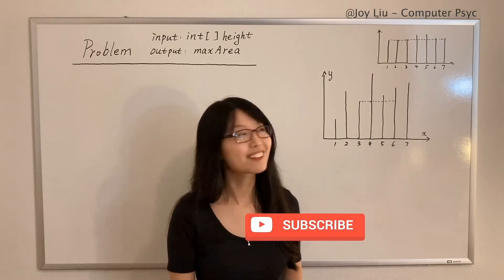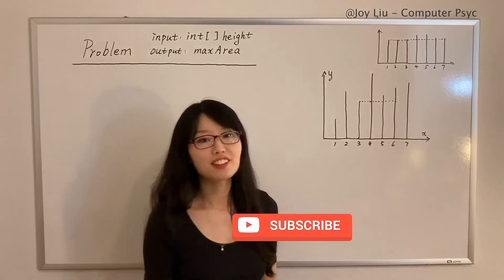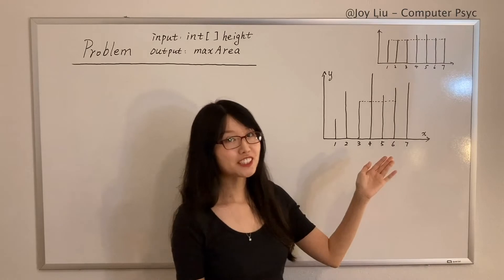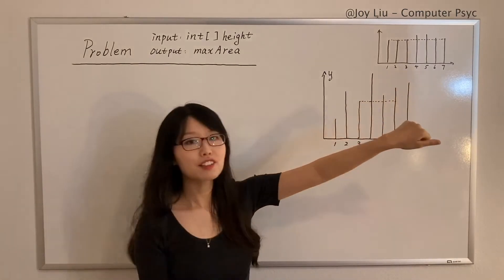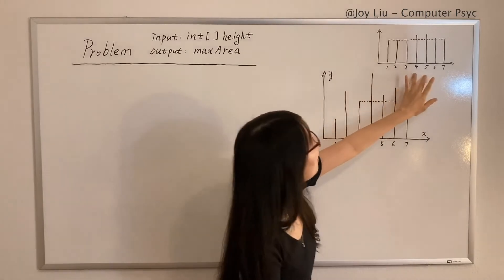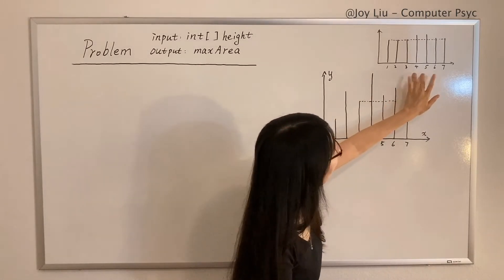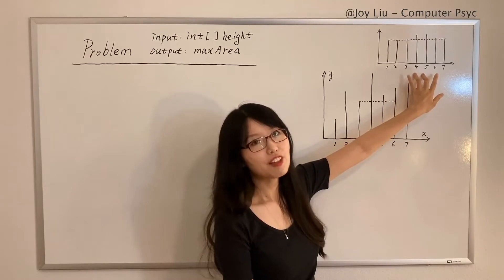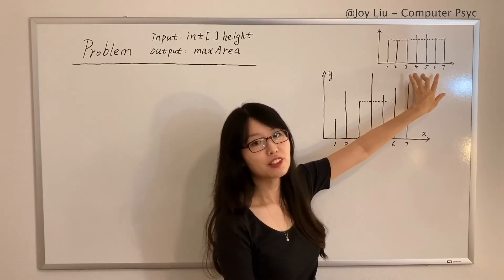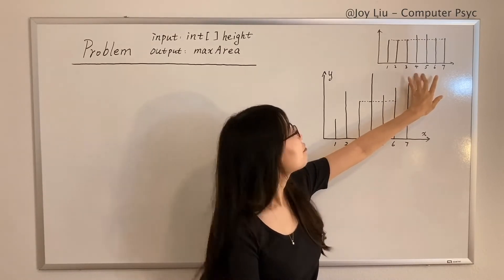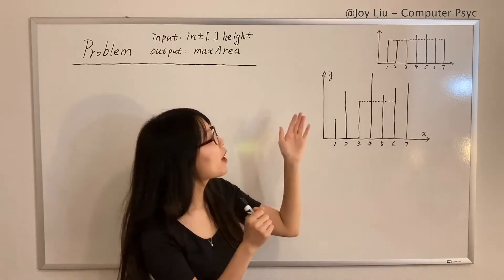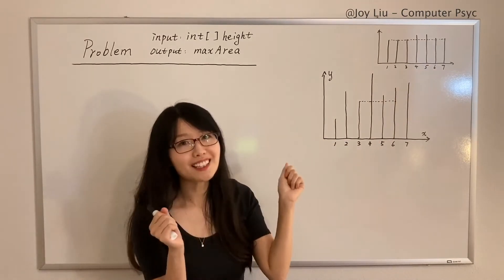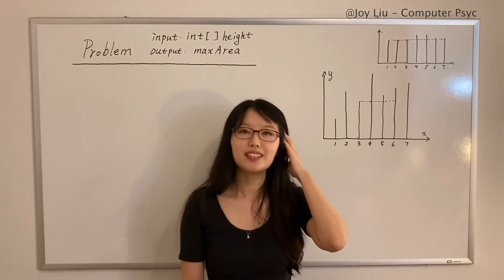A common counterexample is like this. In this example, the largest container is one and seven. Four and five are taller—they're the tallest actually. So one and seven are very far away from each other, while four and five are very close to each other. So even though one and seven are shorter, they win.